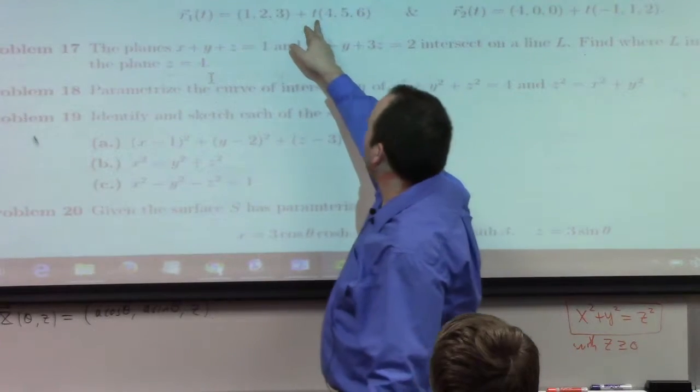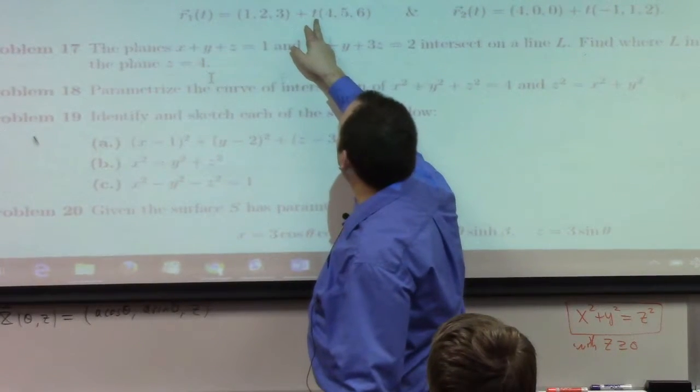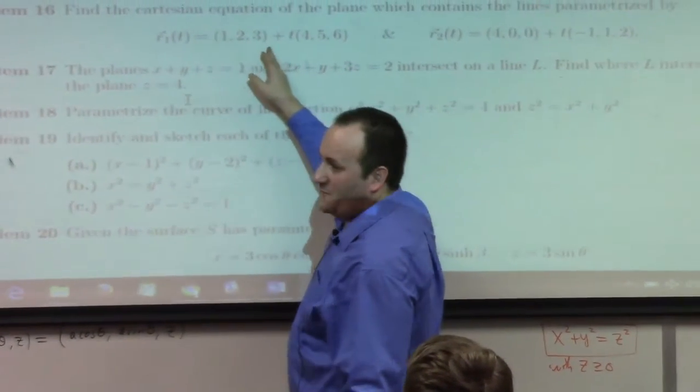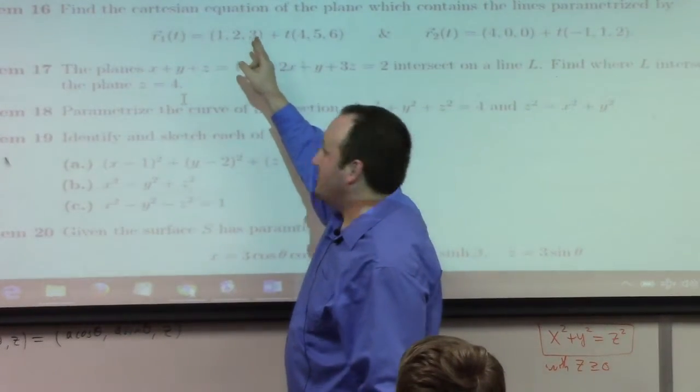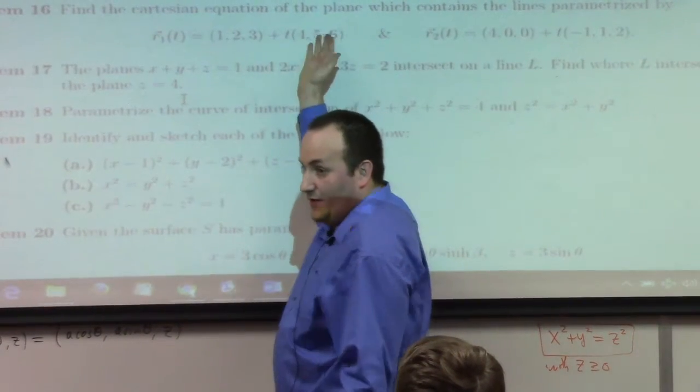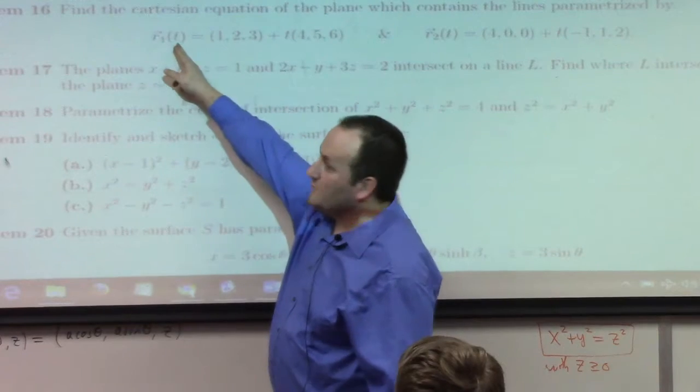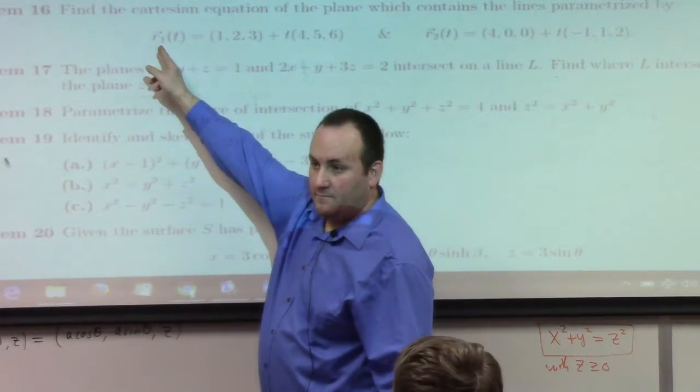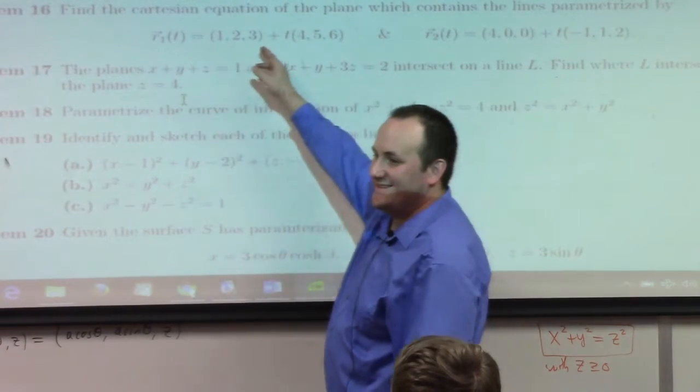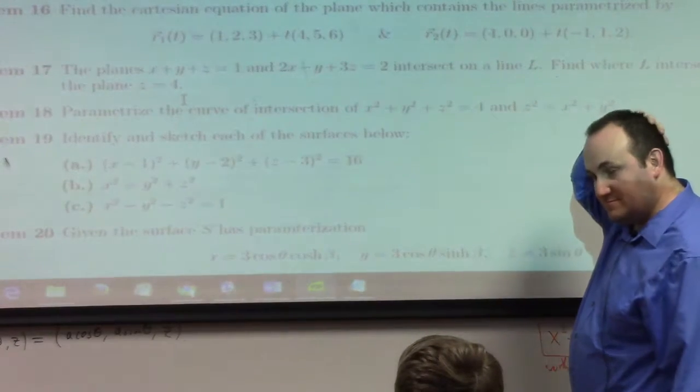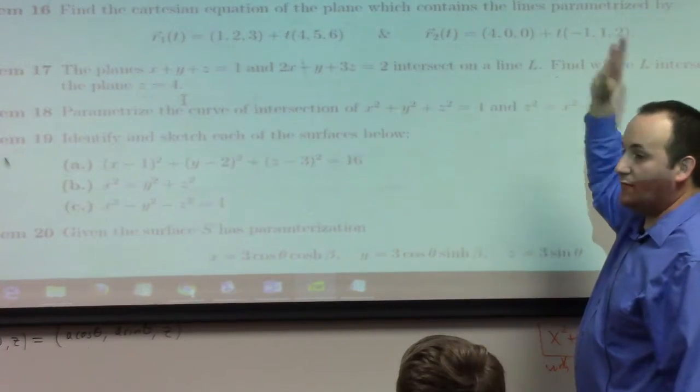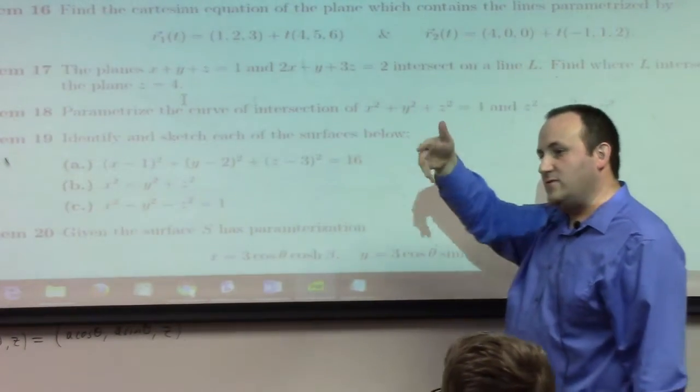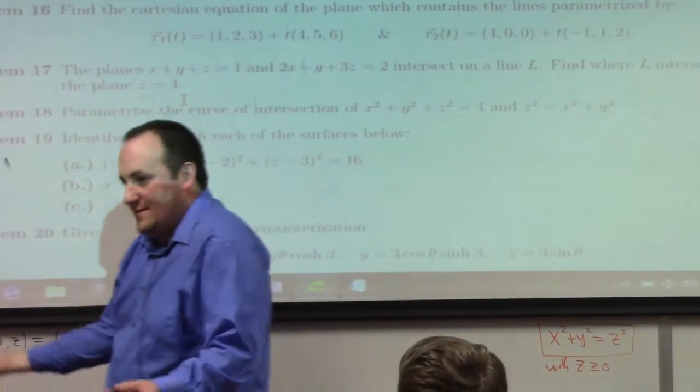There's an embarrassment of riches here. There's so many points you could pick. You could pick 1, 2, 3. You could pick 4, 0, 0. You could pick, I put in t equals to 10. It gives me 41, 52, 63.